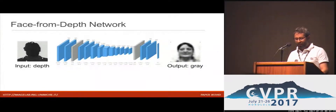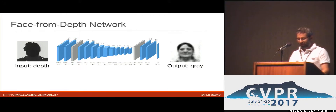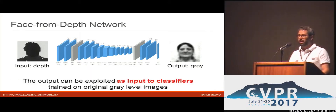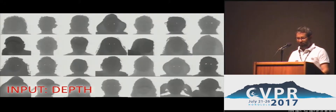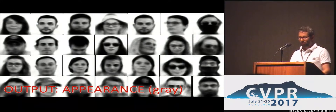The Face from Depth network is one of the main novelties of the system. The network has been trained to recover the gray-level appearance of a face given its depth map. The network is composed of 15 layers in total, and the output is so realistic that it can be directly provided to a system trained on native gray-level images. These are a few examples that are converted to the corresponding gray-level images by the proposed network, and the comparison with the ground truth highlights the network's capabilities.